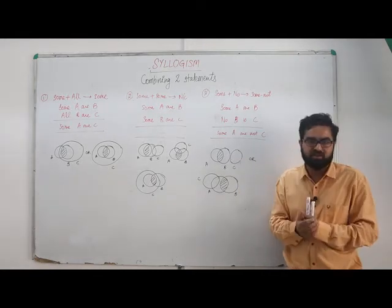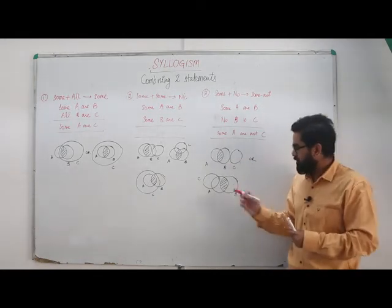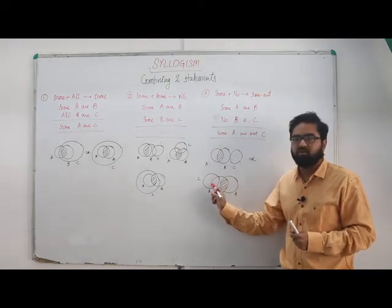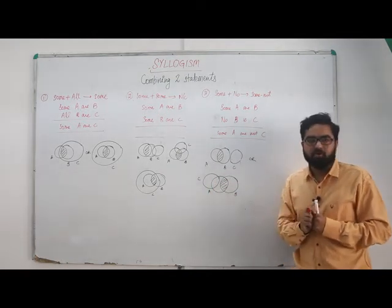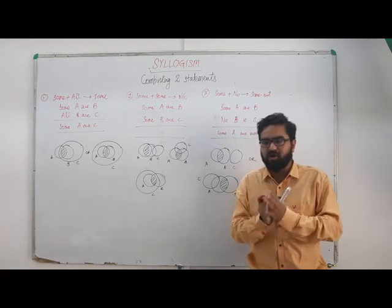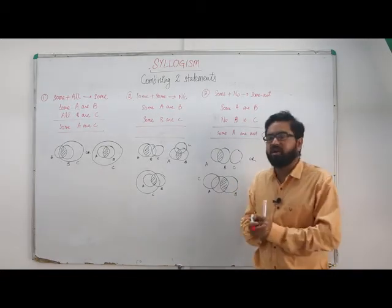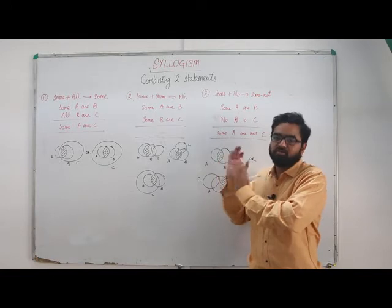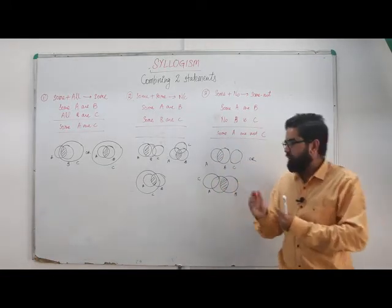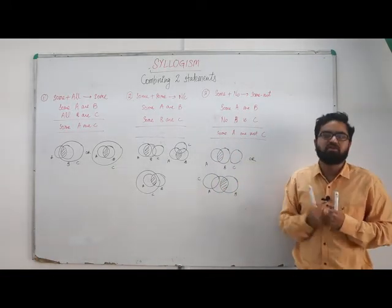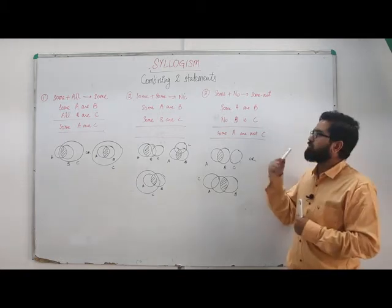The reason is no B is C, so the shaded region cannot be part of C. This shaded region which is the common area between A and B will not be part of C anytime. That means some A are not C. So this is all about rules related to sum.